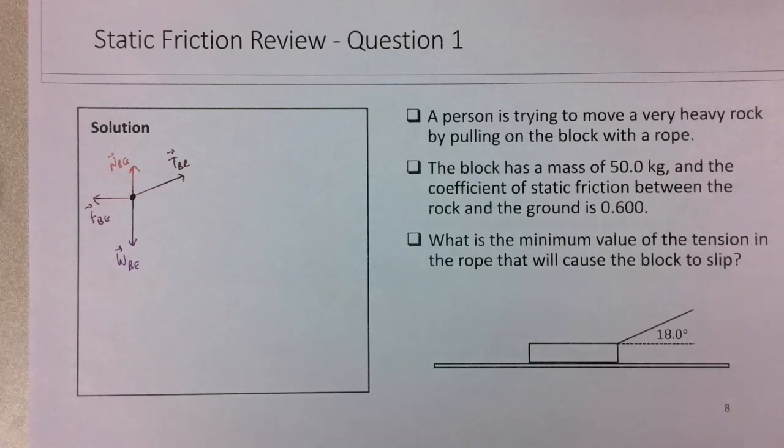So for that to happen, the tension force has to equal the maximum static friction force. And at that point, you're at this sort of slipping condition.